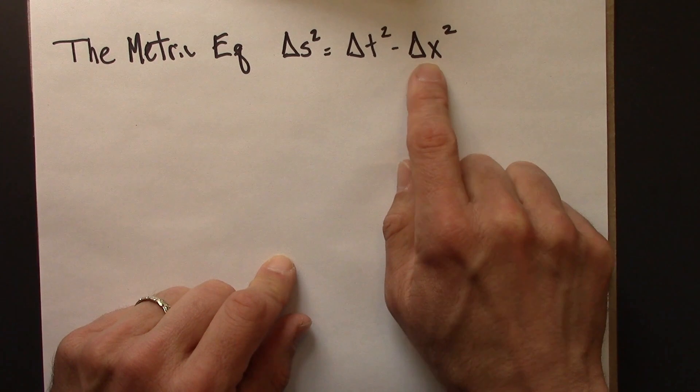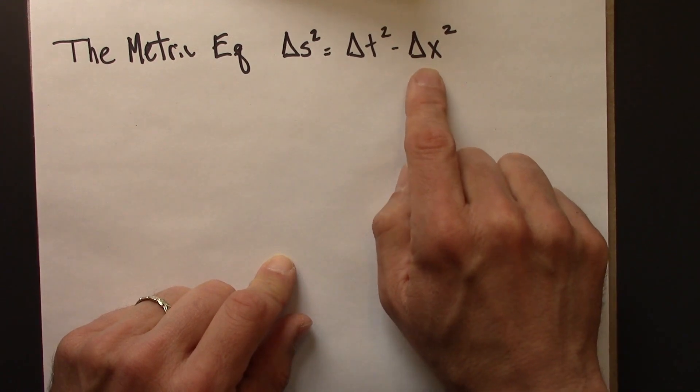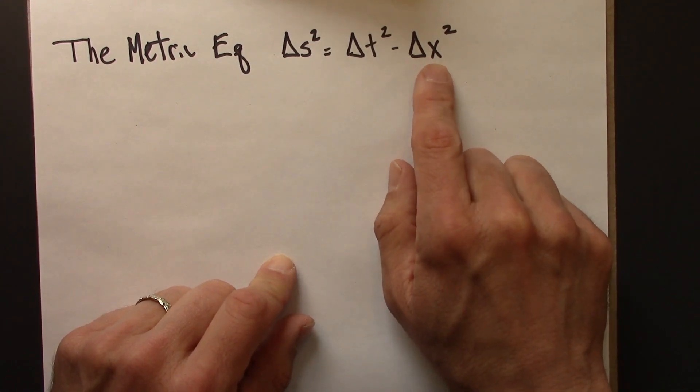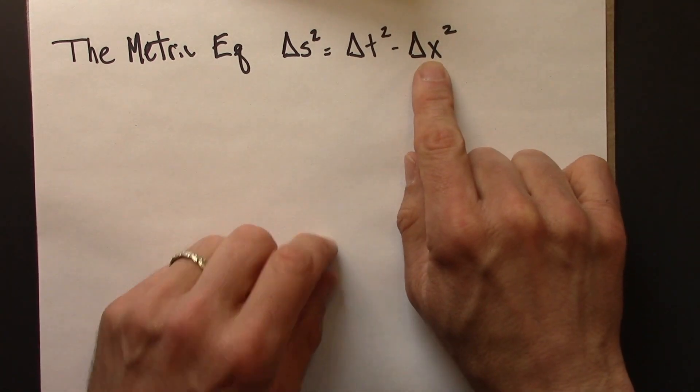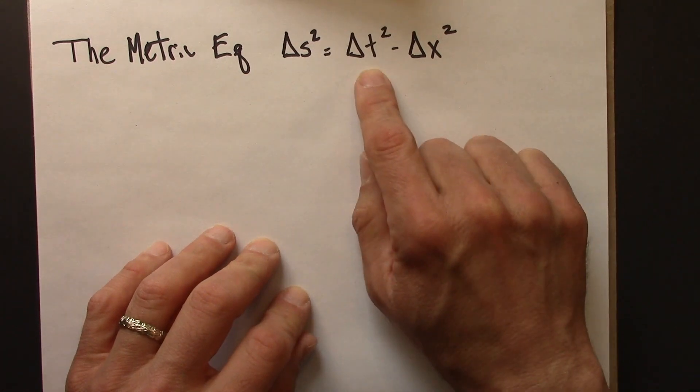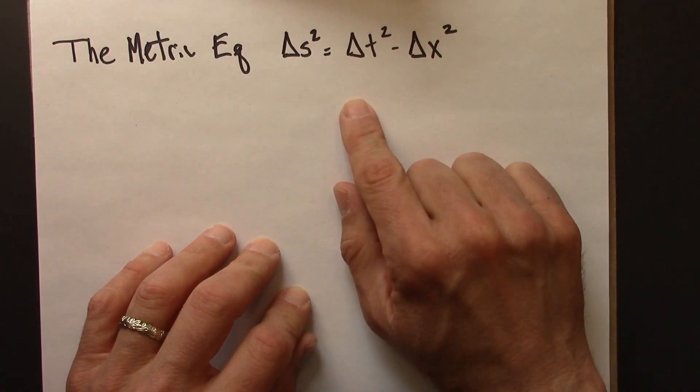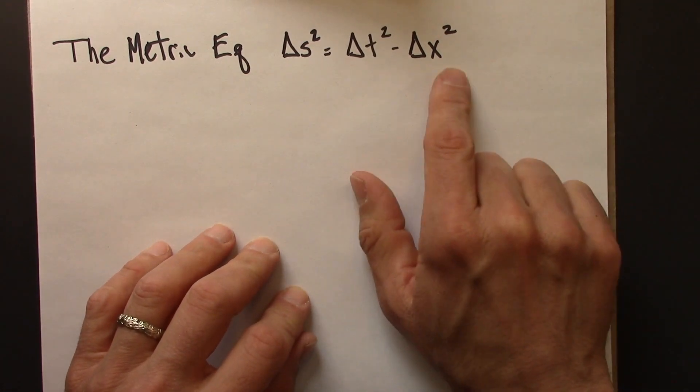I'm going to use delta x for most of the rest of the course because most of the time the spatial differences we can think of as just being in one direction, which we can take to be x. I want to stress that this applies to any pairs of events A and B.